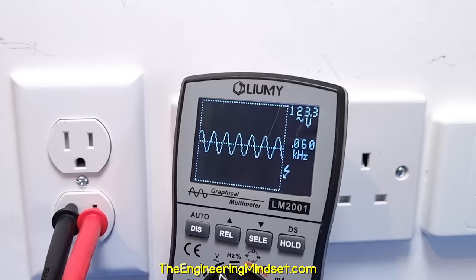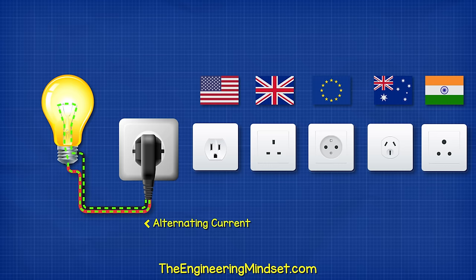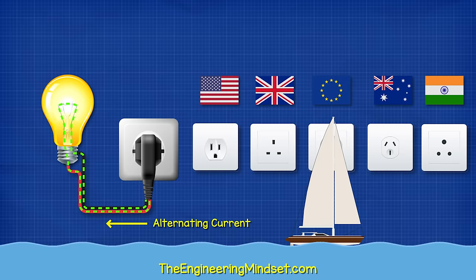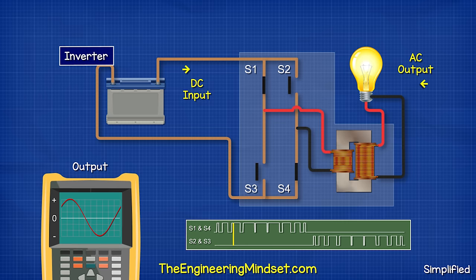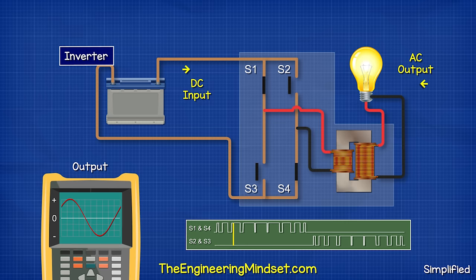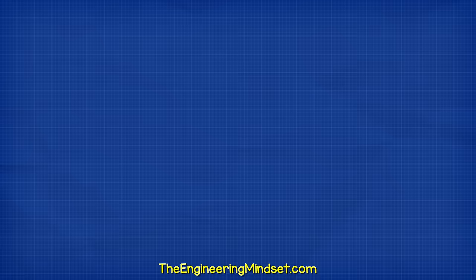But many of our appliances require AC electricity, which works differently. If I connect to this power socket, we have a wave pattern. The electrons are flowing backwards and forwards. It is alternating direction, much like the tide of the sea, flowing in and out. To power these devices, we need an inverter. This will convert the DC into AC. Inside, we basically just have some electronic switches, which turn on and off extremely fast to control the path of the electrons. You can watch our detailed inverter video to learn more.